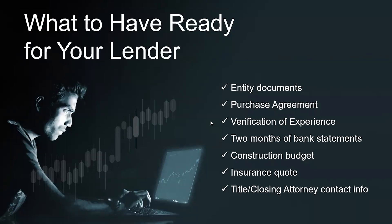What do you need to have ready for your lender? Entity documents, purchase agreement, verification of experience, two months of bank statements, construction budget, insurance quote, title or closing attorney contact information, and a point of contact for the interior appraisal inspection. On the 100% program for fix-and-flip, they also require a feasibility study — they get into the property, review your construction budget, scope of work, and narrative to verify the budget is realistic to complete the project.